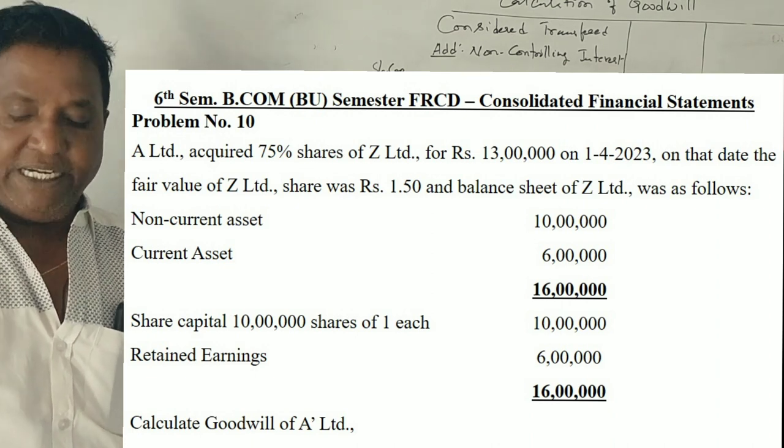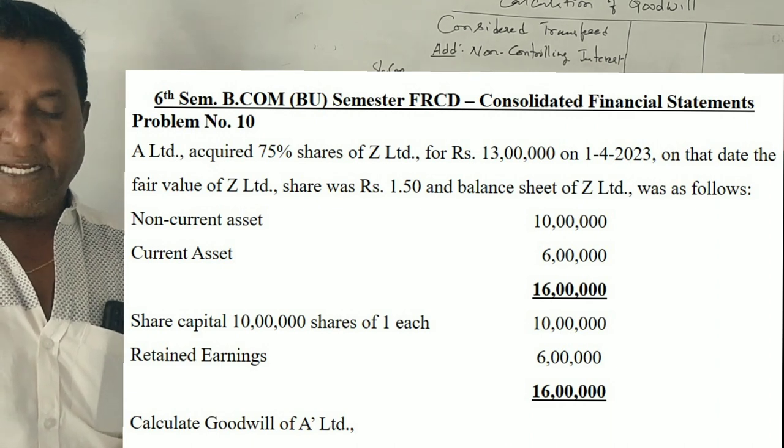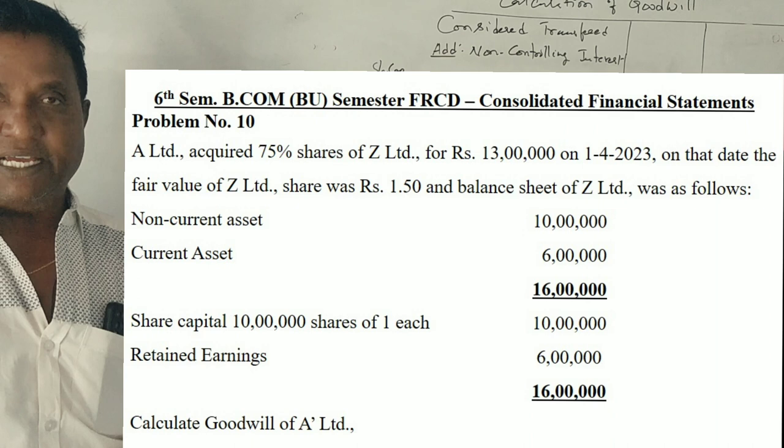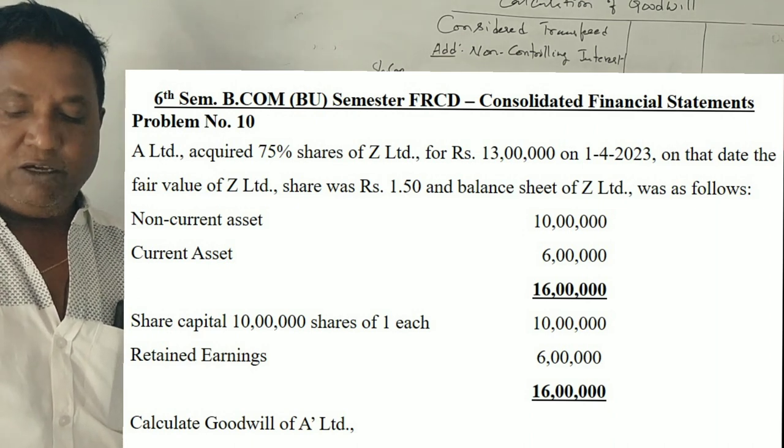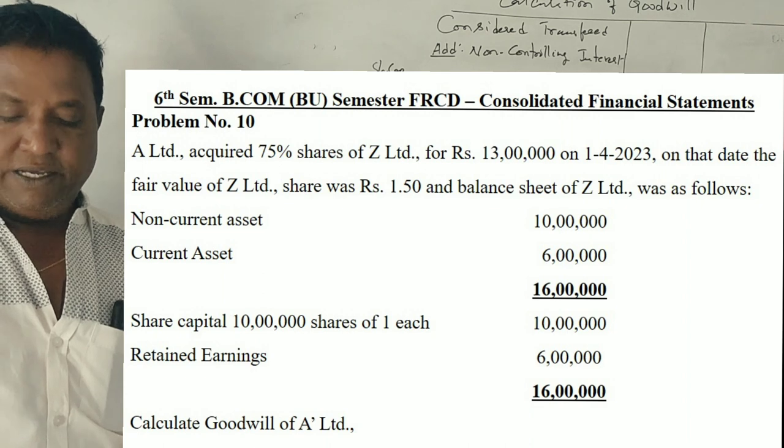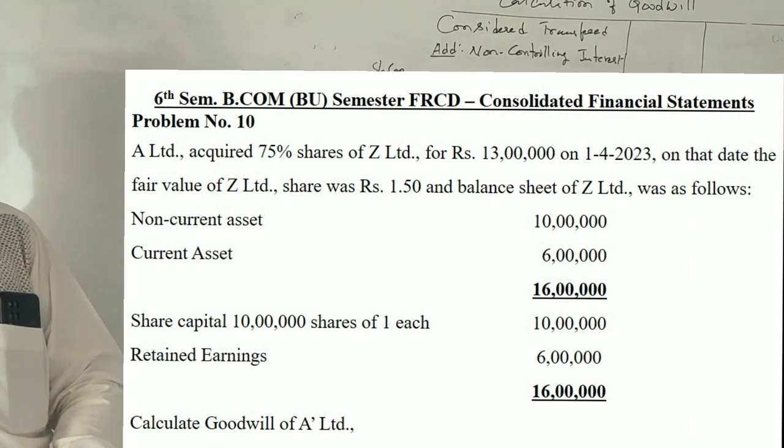The balance sheet of Z company shows: non-current assets 10 lakhs, current assets 6 lakhs, total assets 16 lakhs. Share capital is Rs. 10 lakhs, shares of one rupee each, retained earnings 6 lakhs. Calculate goodwill of A company.